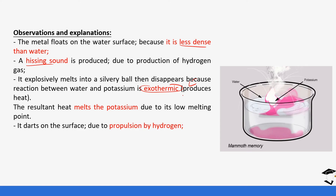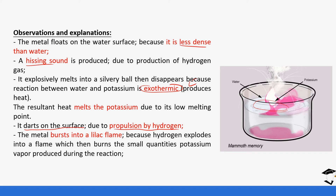The next observation is that the metal darts on the surface. The reason it darts on the surface of the water is because it is being propelled by the hydrogen gas that is being produced; that propulsion is what causes it to dart on the surface. After some time the metal bursts into a lilac flame. The reason it bursts into a lilac flame is that hydrogen first explodes into a flame — hydrogen is very explosive in nature, especially when it combines with oxygen. That flame then reacts with a small amount of potassium vapor to produce the lilac flame, because potassium burns with a lilac flame.